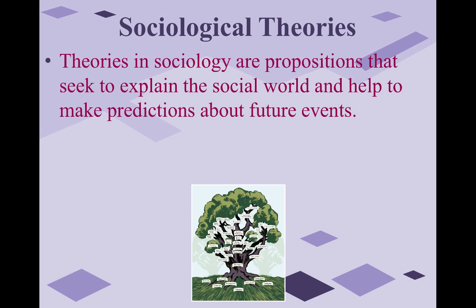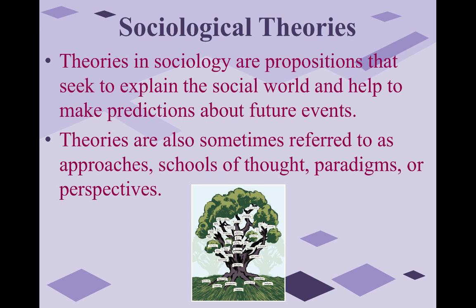Theories in sociology are propositions that seek to explain the social world and help make predictions about future events. They're also sometimes referred to as approaches, schools of thought, paradigms, or perspectives. Sociologists tend to disagree about which are best or most valid, and considering many different perspectives can actually lead to better understandings of a topic by layering them together. There's no right or wrong — they're just different perspectives trying to understand what's going on in the social world.